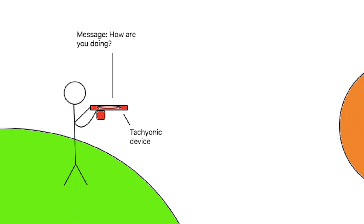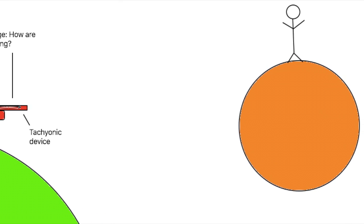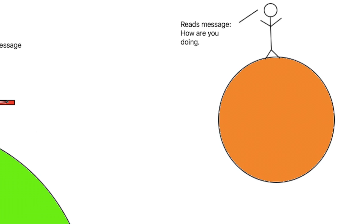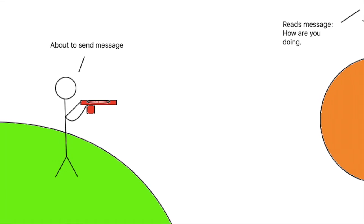Let me tell you. Picture this: you have a tachyonic device that you use to send a message to your friend who is light years of distance away. The interesting phenomenon taking place is that your friend receives the message before you can even send it — and it's the same message that you were going to send. How is this possible? Let's visit the theory of relativity again.